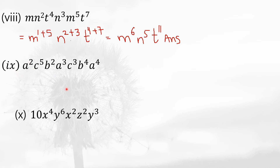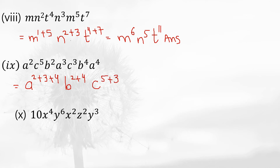Question 10 is similar. We write 10 to the power of 10. For x, add the powers: 4 plus 2 equals 6. For y, add the powers: 6 plus 3 equals 9. Z has only one term, so write z to the power 2 as it is. The answer is 10, x to the power 6, y to the power 9, z to the power 2.